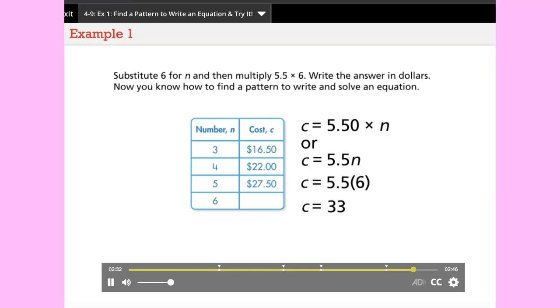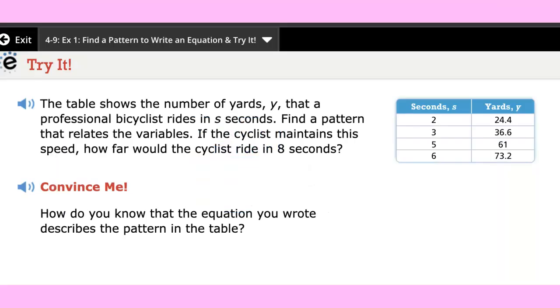How was the equation used to find the cost of six tickets? Substitute 6 for n and then multiply five and five tenths times six. Write the answer in dollars. Now you know how to find a pattern to write and solve an equation.